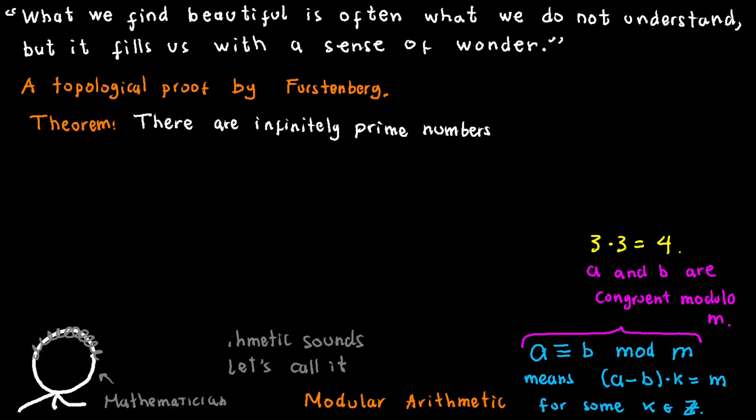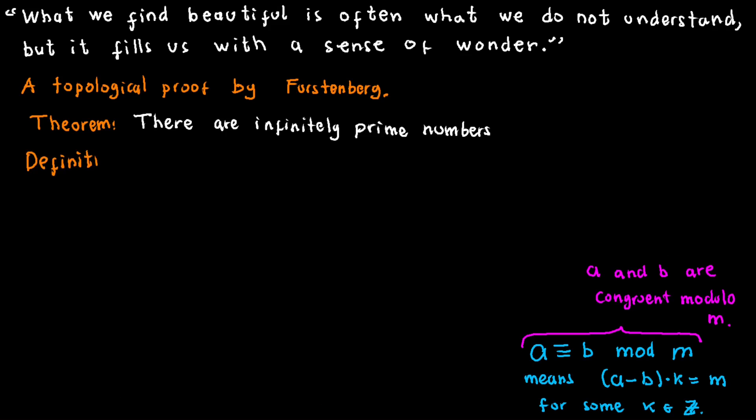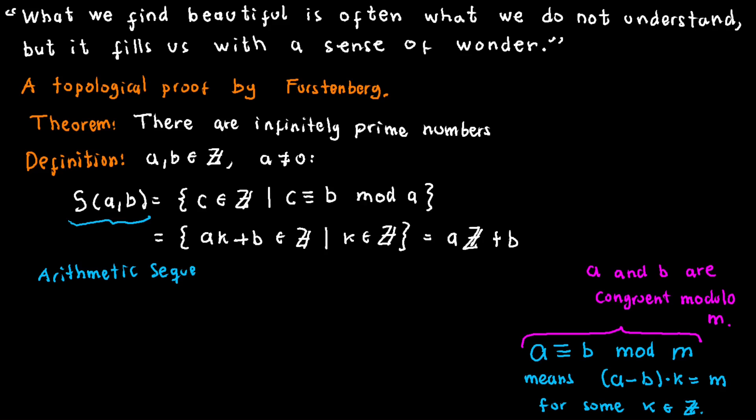Now, let's delve into Furstenberg's explanation of arithmetic sequences. For a pair of integers a and b, the arithmetic sequence S(a,b) encompasses all numbers that are congruent to b modulo a. Although this definition might appear intricate initially, a few examples can provide clarity.